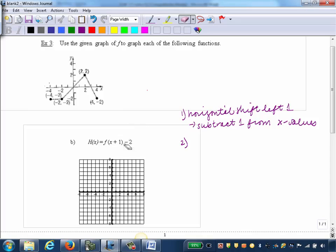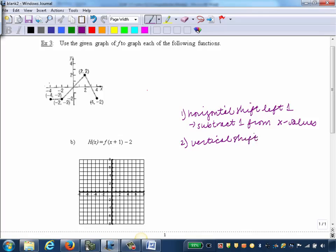Our second transformation, now if we look outside the grouping symbol, we're subtracting 2. Well, subtraction outside the grouping symbol, anything outside the grouping symbol causes a vertical change. So since it says subtraction of 2, we're going to vertically shift. So we have a vertical shift down 2 units. So in order to cause that transformation, I'm going to need to subtract 2 from the y values.